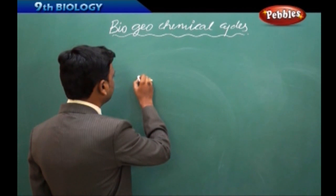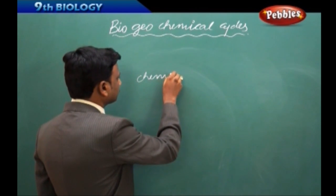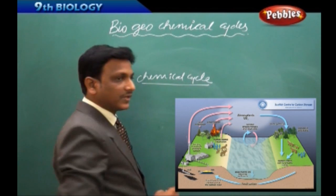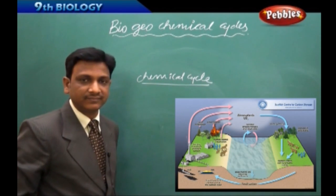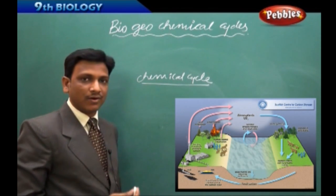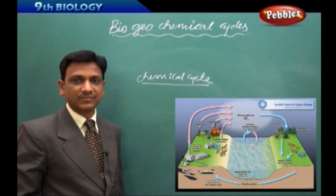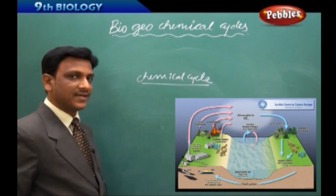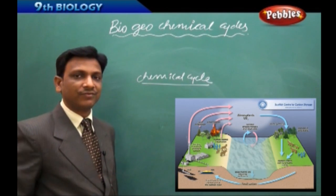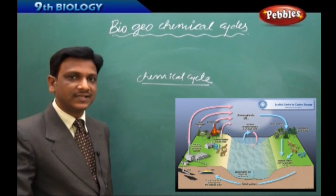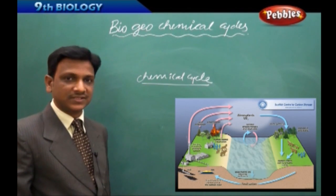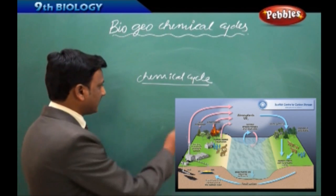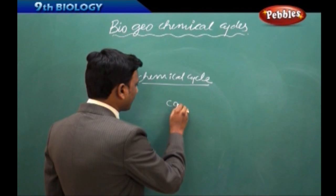What is a chemical cycle? The cycle here is absolutely not the two-wheeler that you ride. A chemical cycle is a sequence of reactions or a sequence of changes which happen in a cyclic way.